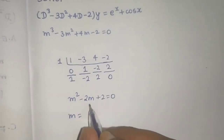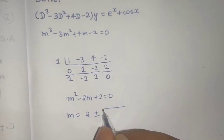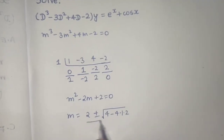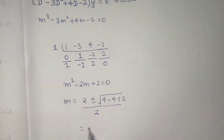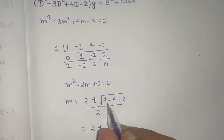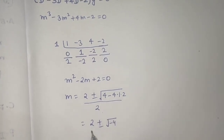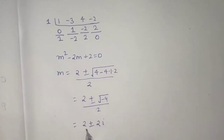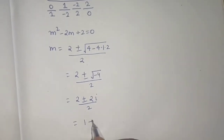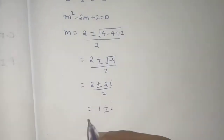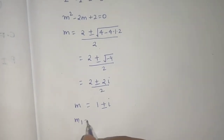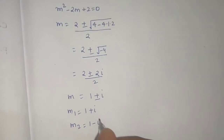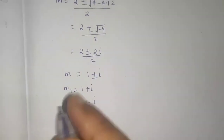Using the quadratic formula: m = [2 ± √(4 − 4·1·2)] / 2 = [2 ± √(−4)] / 2 = [2 ± 2i] / 2 = 1 ± i. So the roots are 1 + i and 1 − i.